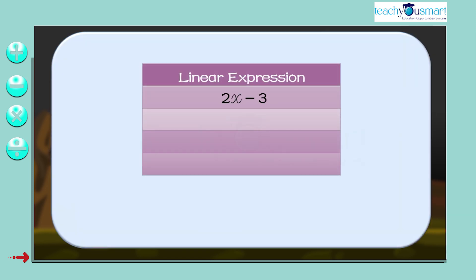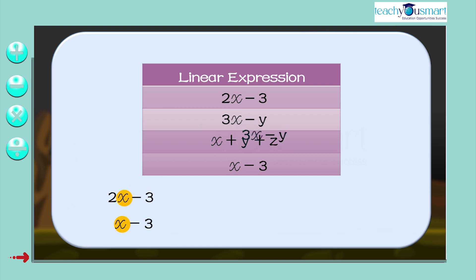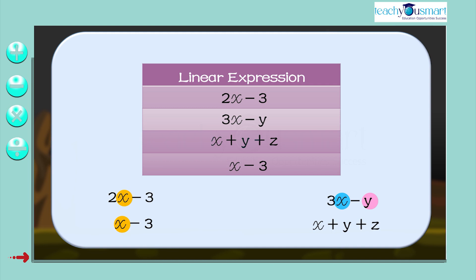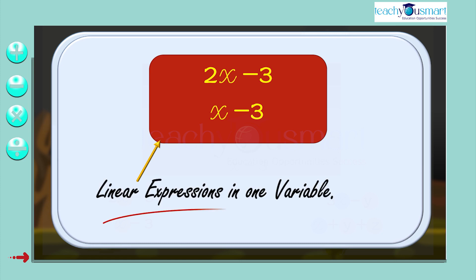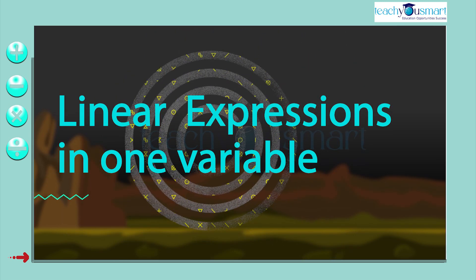Among the linear expressions — 2x minus 3, 3x minus y, x plus y plus z, and x minus 3 — 2x minus 3 and x minus 3 contain only one variable x. But in 3x minus y there are two variables x and y, and in x plus y plus z there are three variables x, y, and z. Therefore 2x minus 3 and x minus 3 are the linear expressions in one variable. In this session we will deal with linear expressions in one variable only.